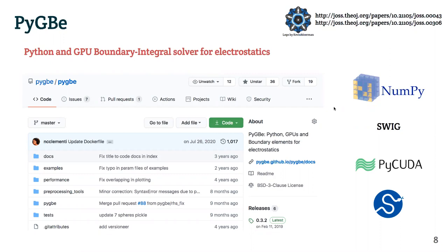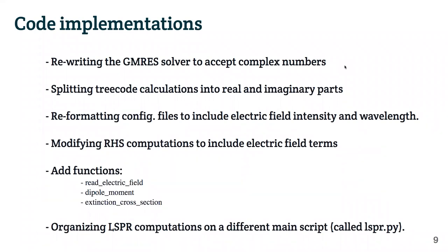To add this new application into the code, we needed to make certain modifications. The main modification was a rewrite of the full GMRES solver, which needed to accept complex numbers, as that was not implemented before. We split the tree code into real and imaginary parts and performed those computations separately. We reformatted all the configuration files to include new parameters for this new physics, such as electric field and wavelength, modified accordingly the right-hand side, added functions to compute the dipole moment and extinction cross-section, and finally bundled most of the main script to call this routine into one separate file.